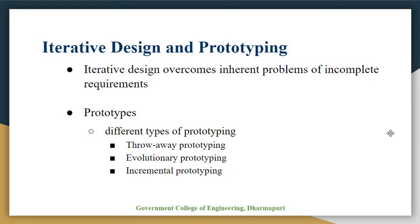In iterative design and prototyping, requirements for an interactive system cannot be completely specified from the beginning of the life cycle. The only way to be sure about some features of the potential design is to build them and test them out on real users. The design can then be modified to correct any false assumptions revealed in testing. The iterative design process tries to overcome the inherent problems of incomplete requirements specification by cycling through several designs, incrementally improving upon the final product with each pass.